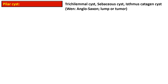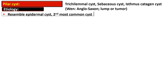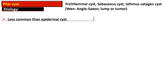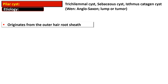Wen is an Anglo-Saxon term meaning lump or a tumor. The pilar cyst resembles epidermal cyst and is the second most common cyst of the skin, but it is less common than epidermal cyst.